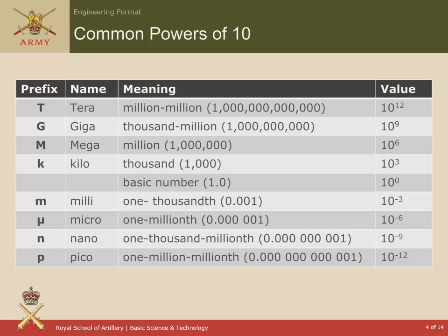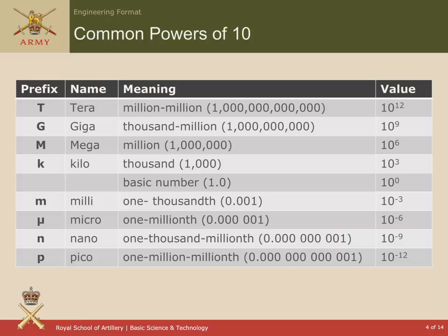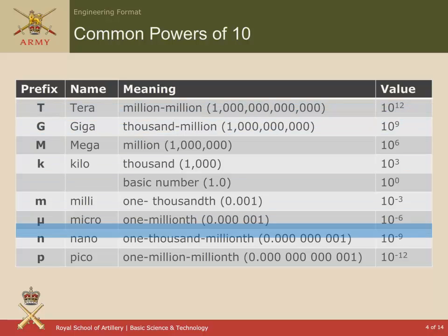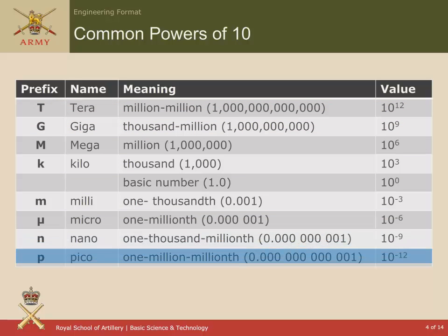This slide shows the common powers of 10. If you take the right-hand column, you note that the powers — 12, 9, 6, 3, 0, minus 3, minus 6, minus 9, minus 12 — differ by 3 each time. So we come down from 10 to the power of 12, which is tera, all the way down to 10 to the minus 12, which is pico.